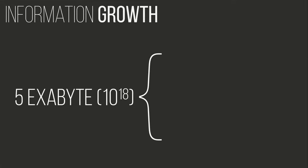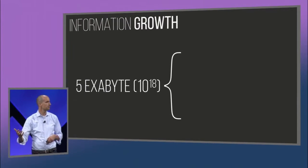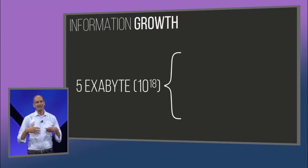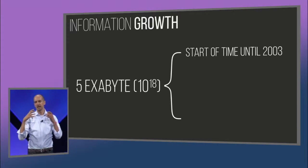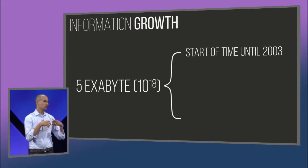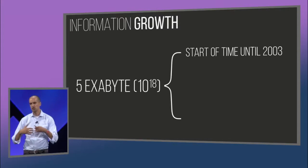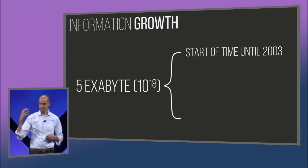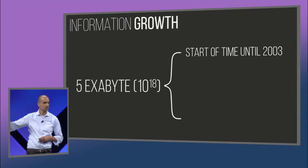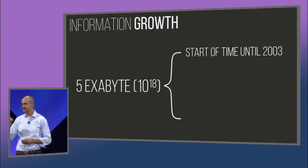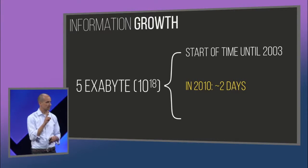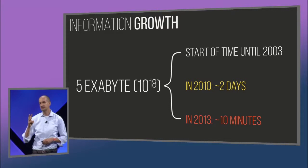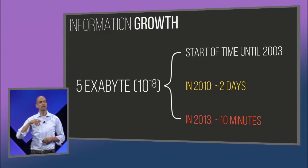Here's data compiled by Eric Schmidt, chairman of Google. He asked a research team: how much information did mankind produce until the year 2003? If you take all the cave drawings, the works of Michelangelo, the music we composed, the works in the Library of Alexandria, and digitize everything, you get five exabytes — a one with 18 zeros. The same amount of data in 2010 we produced in two days. Three years later, we produced the same amount in ten minutes. That is what exponential curves look like.